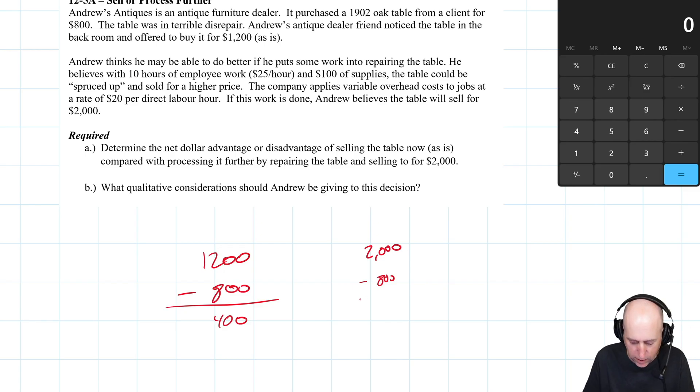$250 in employee time, $100 of supplies, $100 of material, and $20 per direct labor hour in variable overhead. It's 10 hours, so $200 in variable overhead. So where are we at here? $2,000 minus $800 minus $250 minus $100 minus $200.